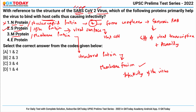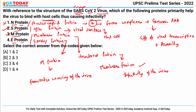Fourth is E-protein or envelope protein. This is another structural protein which, along with M-protein, forms the outer covering of the virus, but it has nothing to do with binding. So this is wrong and the correct answer becomes option B — that is 2 and 3.